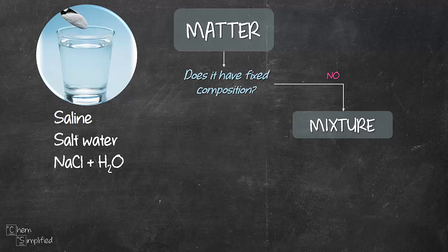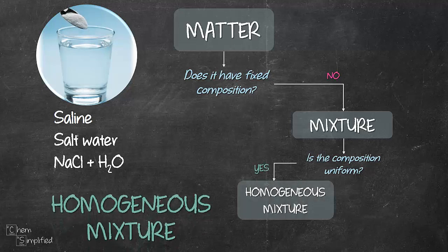Now, if we need to further classify this, then we ask the next question: is the composition uniform? So look at that glass of salt water. Does it look like it's just one thing? Or does it look like it's a little bit different on the top or on the side or at the bottom of the glass? No, right? It looks exactly the same throughout. So the composition is uniform. So therefore, it's a homogeneous mixture.